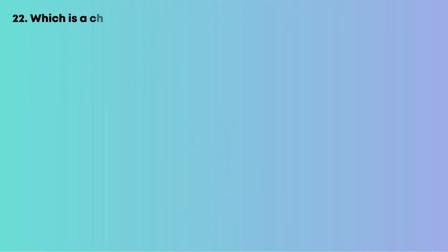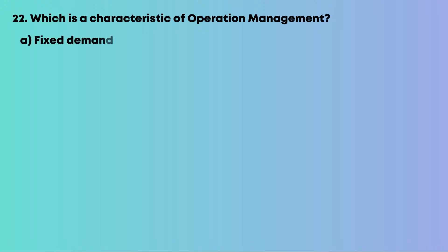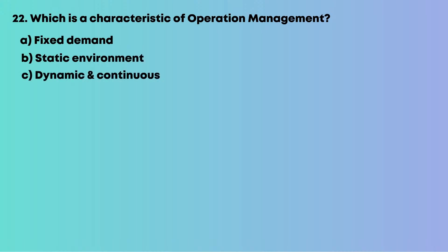Question 22: Which is a characteristic of operations management? Options are: A, fixed demand; B, static environment; C, dynamic and continuous; D, total automation.